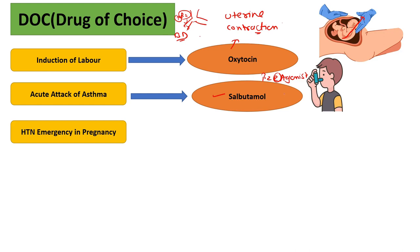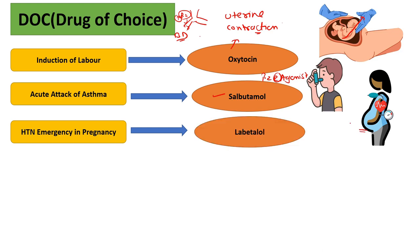For hypertension in pregnancy, the drug of choice is labetalol. Labetalol is a third-generation beta blocker. It has two activities — it blocks both alpha as well as beta receptors. Third-generation beta blockers block two types of receptors.